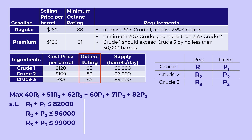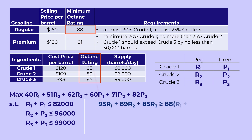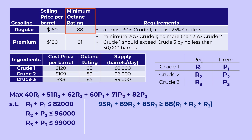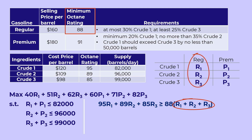We are provided with the octane rating for the crudes, but the octane ratings for the products are constrained by given minimum values. For the octane constraint for regular, we can write: 95R1 plus 89R2 plus 85R3 greater than or equal to 88 times (R1 plus R2 plus R3). Recall that R1 is crude 1 contained in regular, and crude 1 has an octane rating of 95. Therefore, 95R1 is the total octane contribution of crude 1 to regular. Similarly, 89R2 for crude 2 and 85R3 for crude 3. Minimum 88 means at least 88, so we use the greater than or equal sign, with 88 times regular, where regular means R1 plus R2 plus R3.